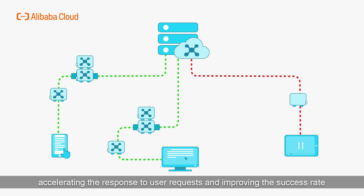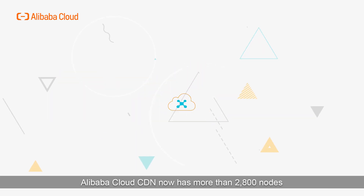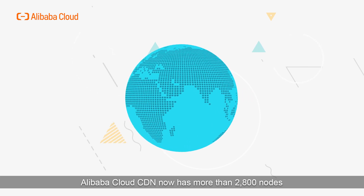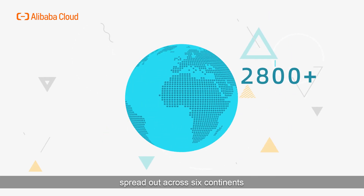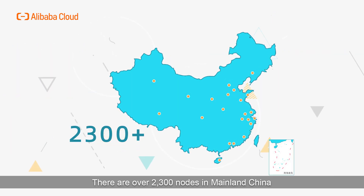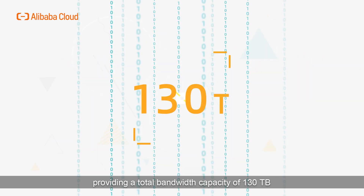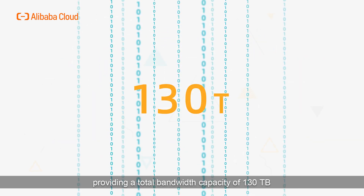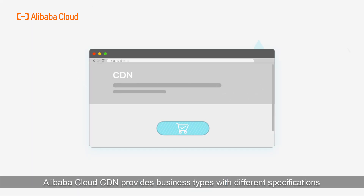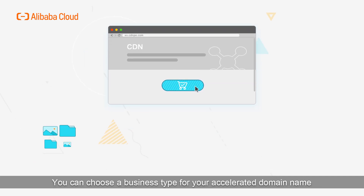After years of development, Alibaba Cloud CDN now has more than 2,800 nodes spread out across six continents. There are over 2,300 nodes in mainland China and more than 500 outside it, providing a total bandwidth capacity of 130 terabits.